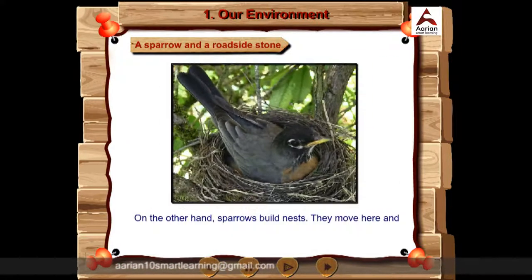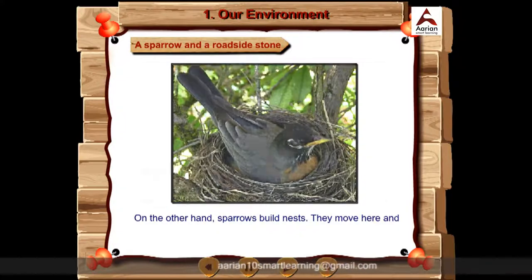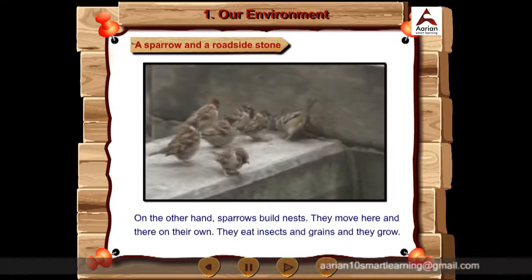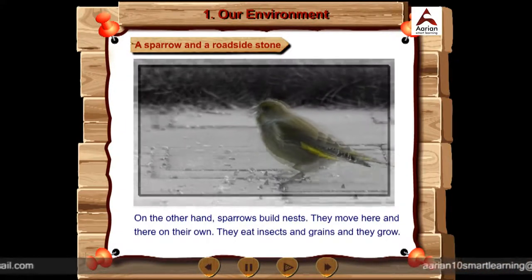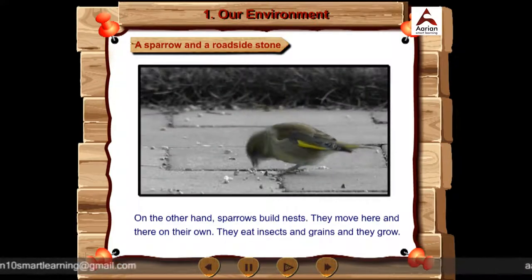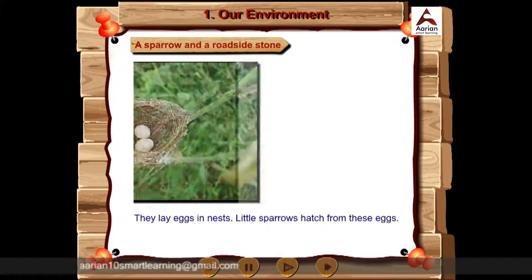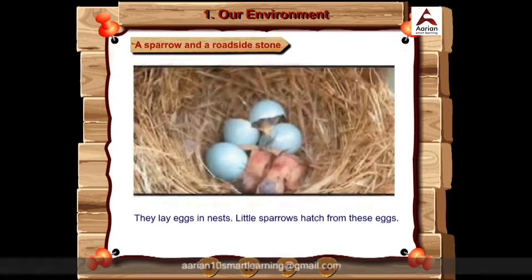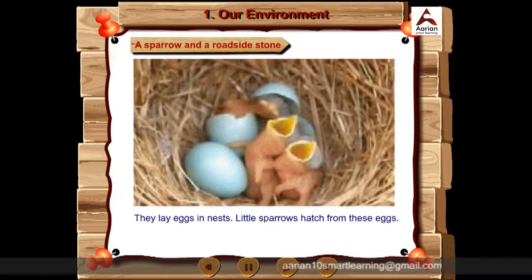On the other hand, sparrows build nests. They move here and there on their own. They eat insects and grains and they grow. They lay eggs in the nests. Little sparrows hatch from these eggs.